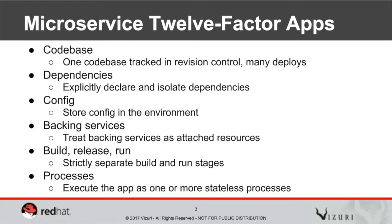One code base is used for one microservice. Dependencies are explicitly declared. This is because you want to isolate your dependencies between your services — that's pretty important. Your configuration is stored in the environment.